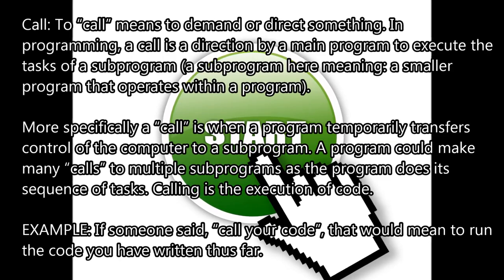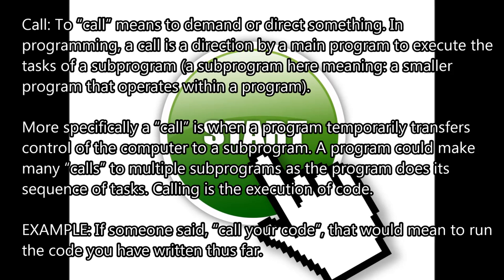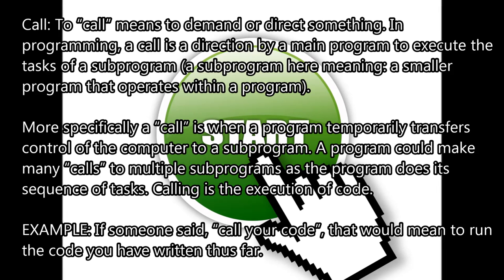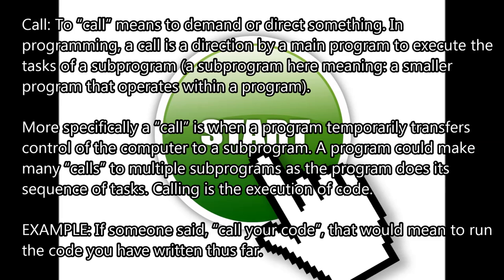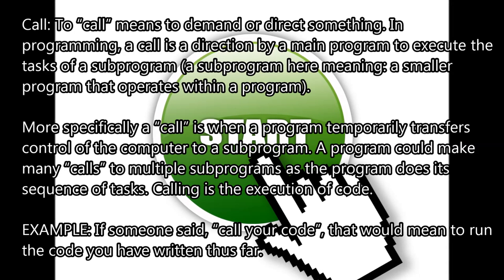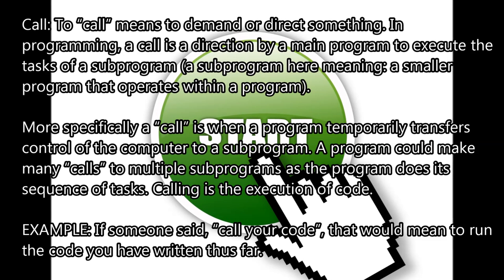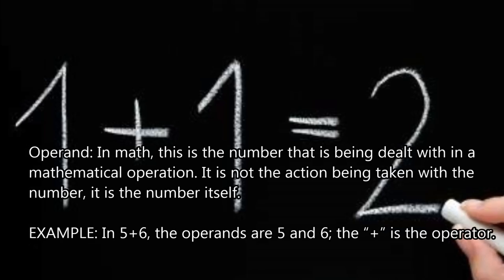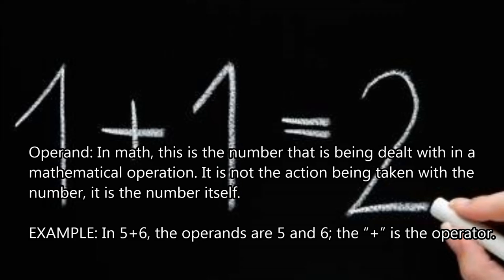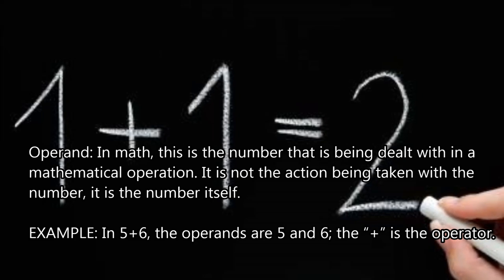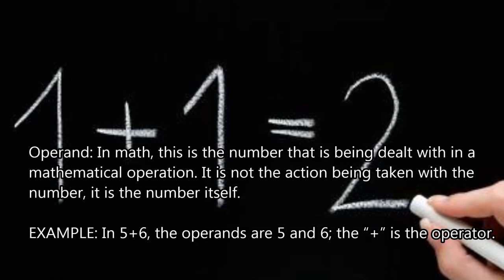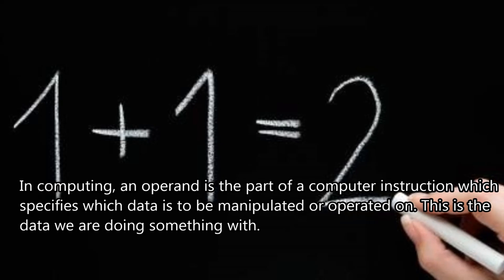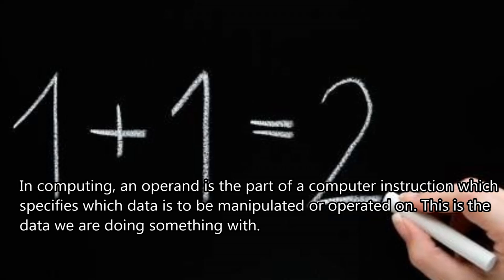Call — a direction by a main program to execute the tasks of a subprogram, temporarily transferring control of the computer to that subprogram. A program could make many calls to multiple subprograms as it does its sequence of tasks. For example, if someone said 'call your code,' that would mean to run the code you have written thus far. Operand — in math, this is the number being dealt with in a mathematical operation, not the action being taken. For example, in 5 plus 6, the operands are 5 and 6, and the plus sign is the operator. In computing, an operand specifies which data is to be manipulated.